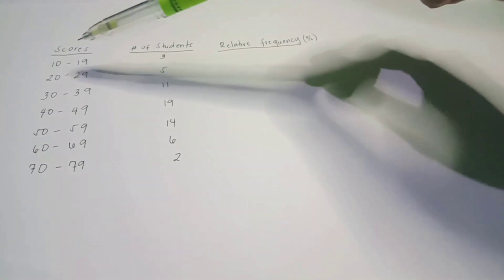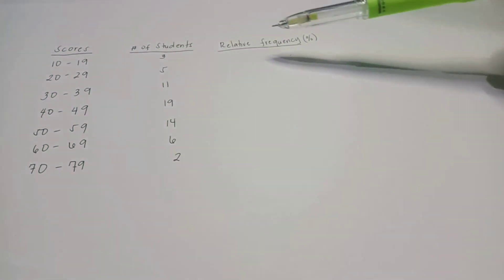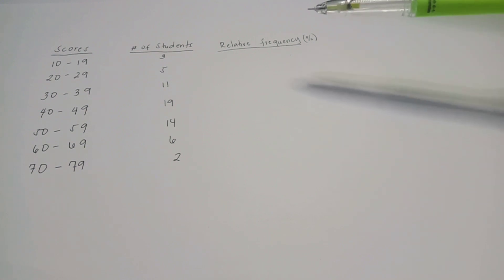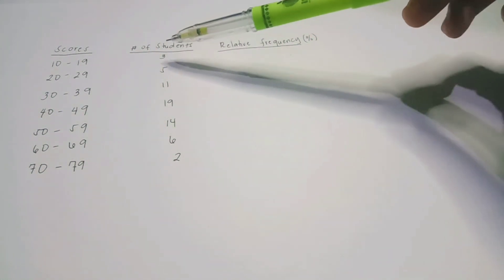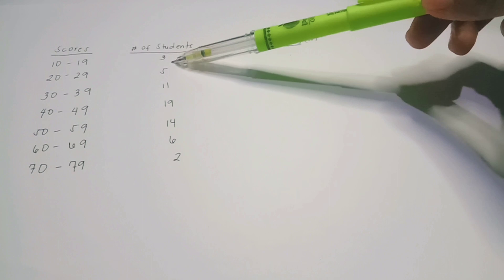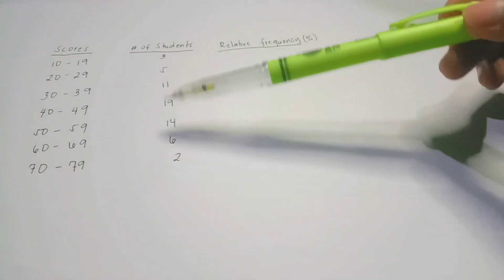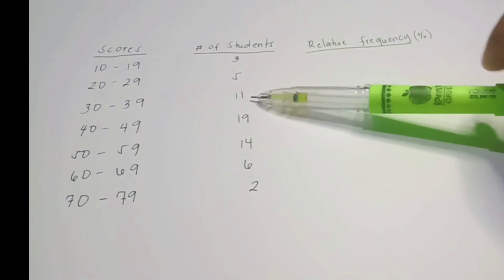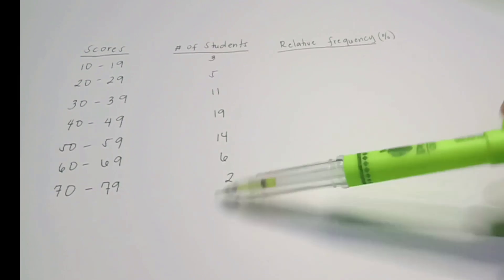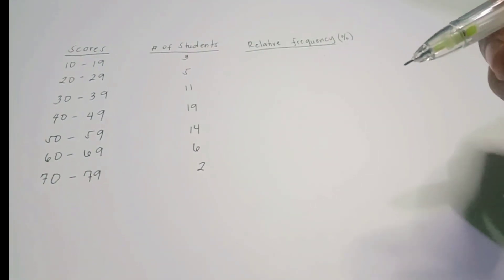So these are our absolute frequencies and these are the classes. For example, the class 10 to 19 has a corresponding absolute frequency of 3. When we add all the frequencies — 3 plus 5 plus 11 plus 19 plus 14 plus 6 plus 2 — that equals 60. Therefore, our total number of frequencies, n, is 60.